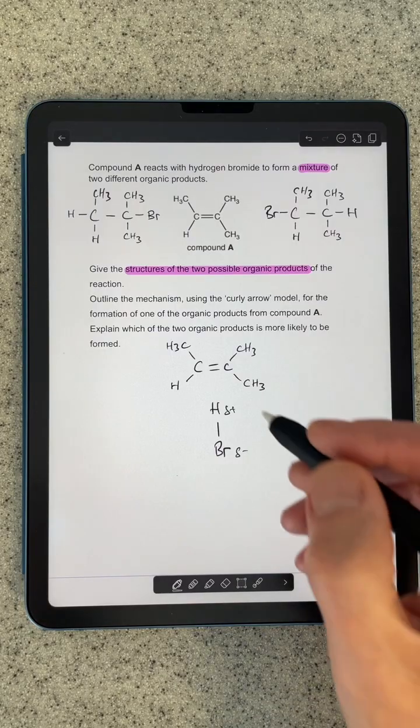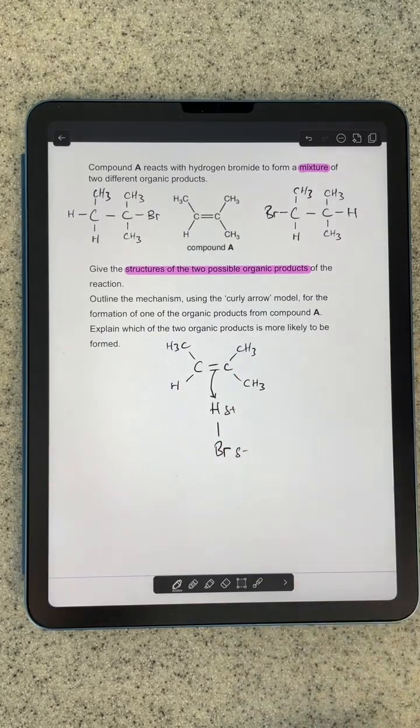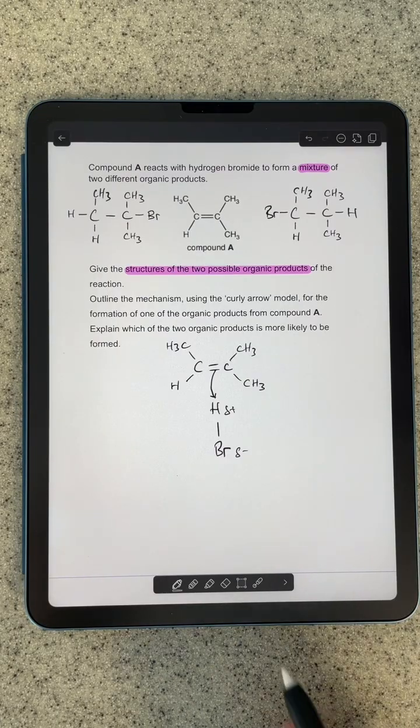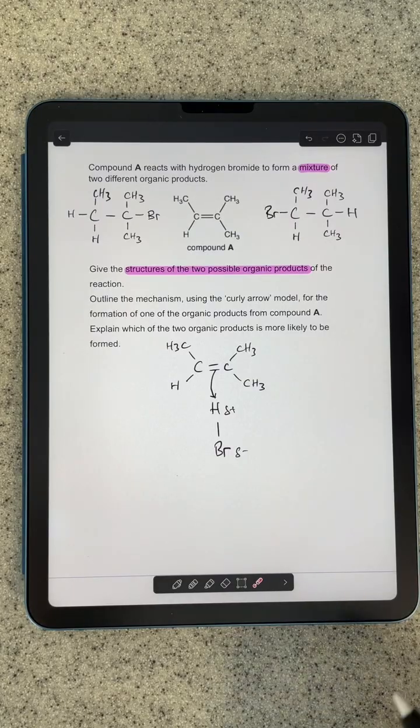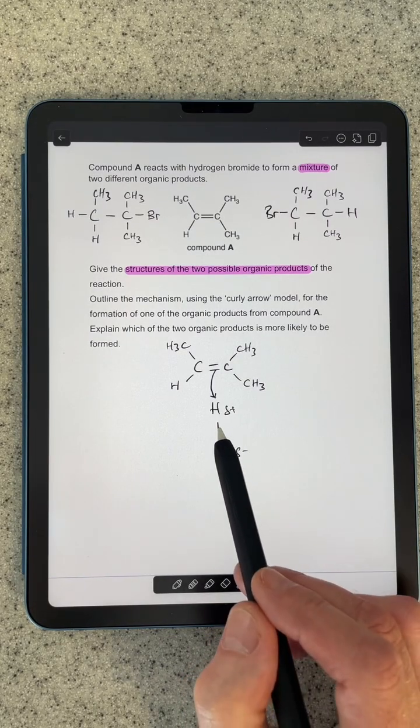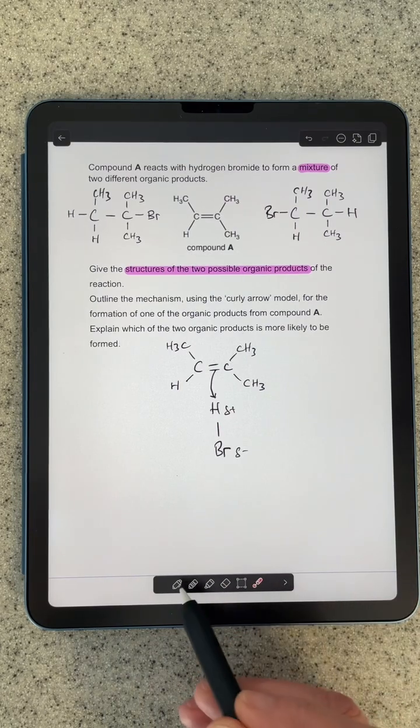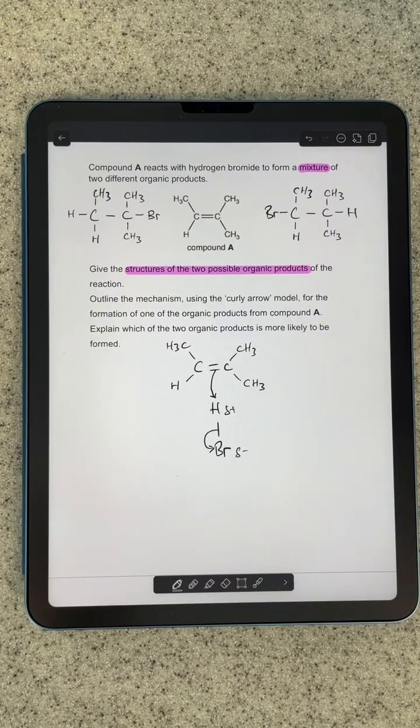So what's going to happen, the pi electron pair is going to be attracted to that slightly positive hydrogen. We show that with that curly arrow, just make sure your curly arrow starts in the middle of that bond. And the other thing that happens is the pair of electrons in the HBr bond, they are completely repelled onto that bromine, and it's going to break that covalent bond by heterolytic fission.